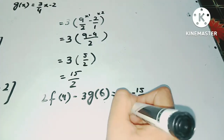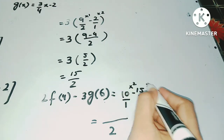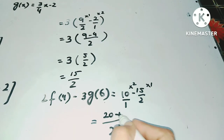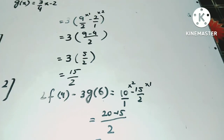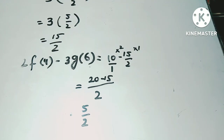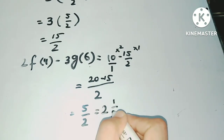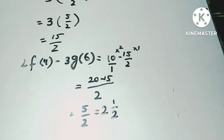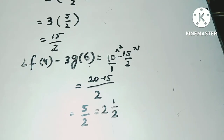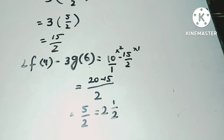Writing 10 as 10/1 and taking LCM of 2: (20 - 15)/2 = 5/2. Converting to a mixed number: 5 ÷ 2 gives 2 remainder 1, so the answer is 2 whole 1/2. I hope today's lecture is clear to you. Do the practice because when you practice, the concept becomes clearer. Take very good care of yourself. Thank you very much.